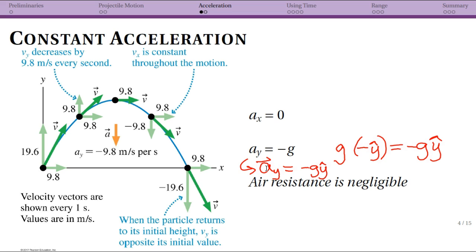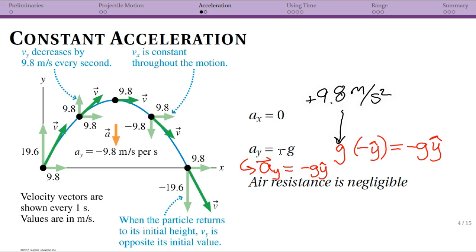Remember that g is 9.8 meters per second squared — in particular, it's plus 9.8 meters per second squared. One thing you might get tripped up by is putting negative 9.8 meters per second squared for g, and then also putting this minus sign, so those minus signs cancel. Always have g be positive so that the direction — the negative y-hat direction, the down direction — is what gives you that minus sign. So g is a positive constant and the direction gives you that minus sign.